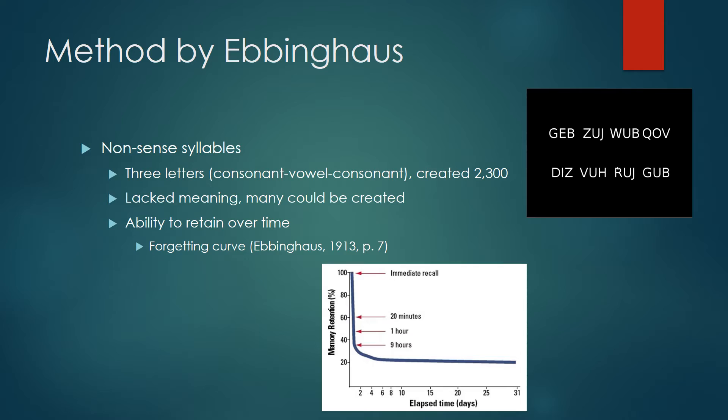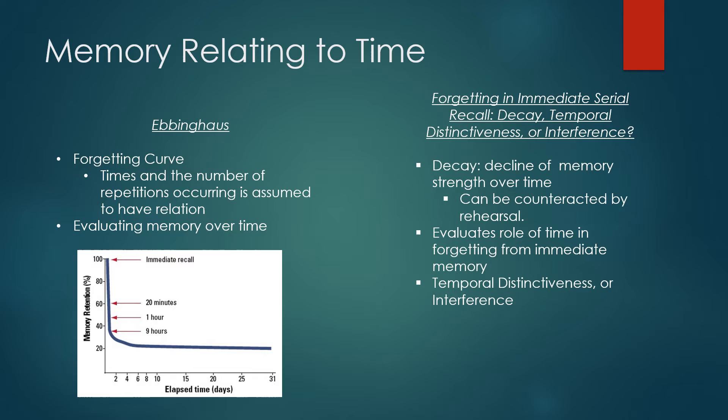This leads me to looking at the contributions Ebbinghaus left for future work. Research regarding memory since Ebbinghaus follows similar themes and findings from his work. In the forgetting and immediate serial recall, decay, temporal distinctiveness, or interference — decay is a prominent discussion. It is defined as the decline of memory strength over time. The article also mentions that decay can be counteracted by rehearsal. The forgetting curve shows how much memory was recalled over a certain amount of time after learning the material. He found that as time furthers from the point of memorization, recollection decreases.